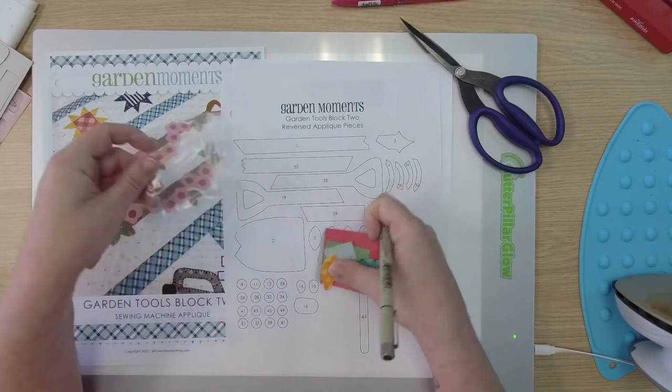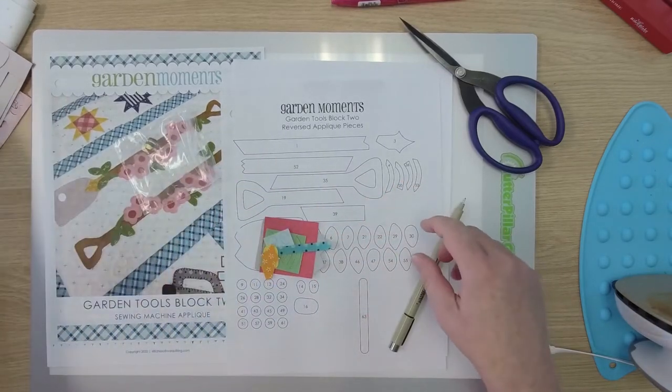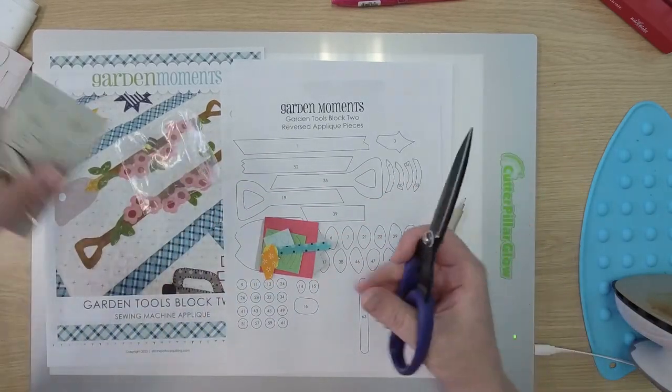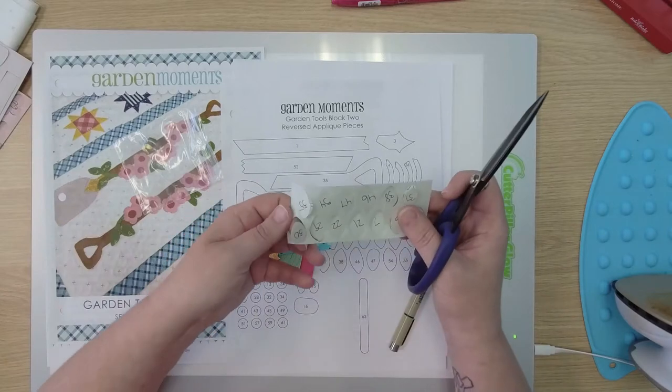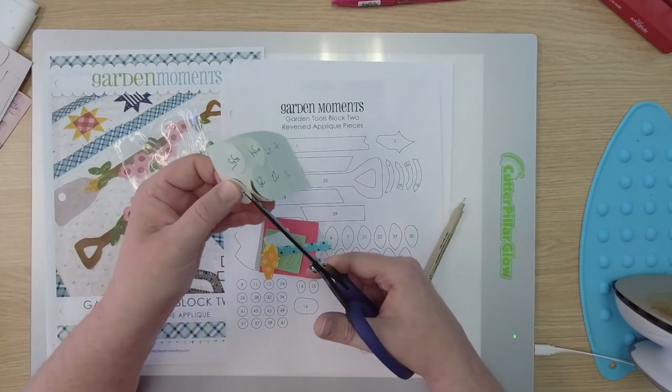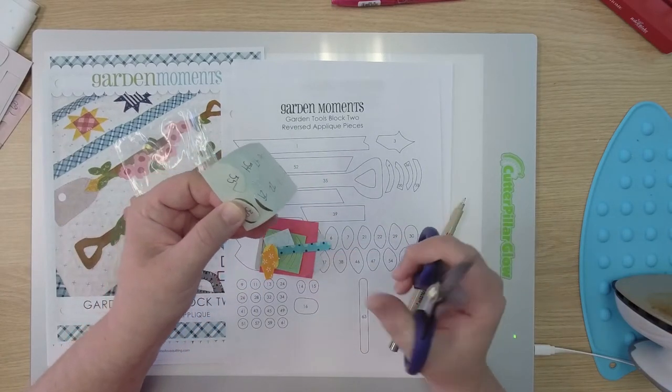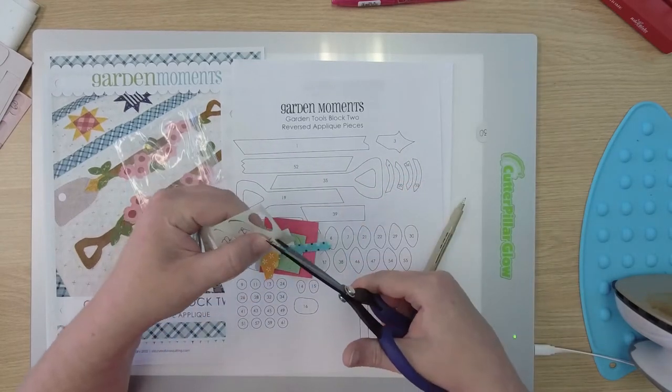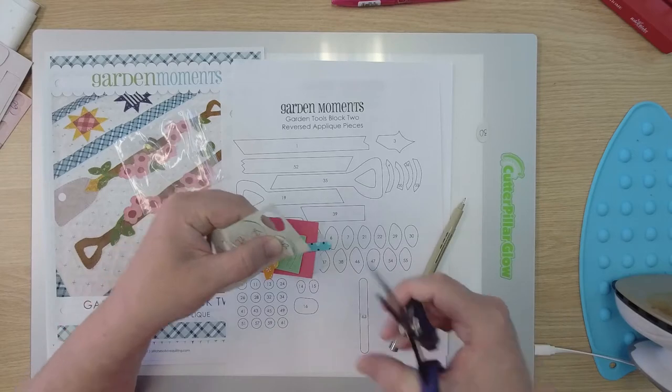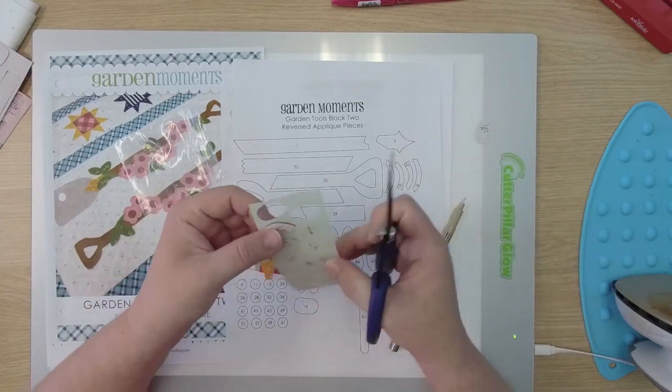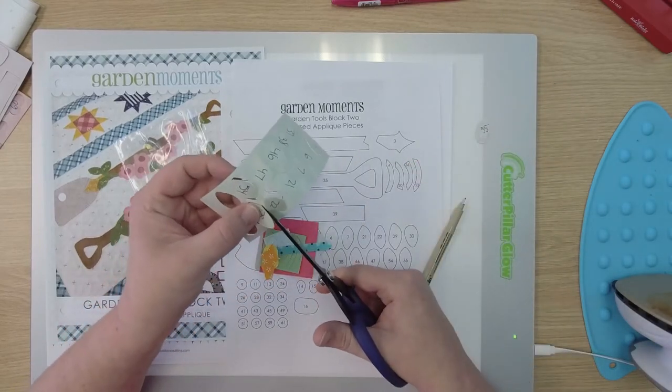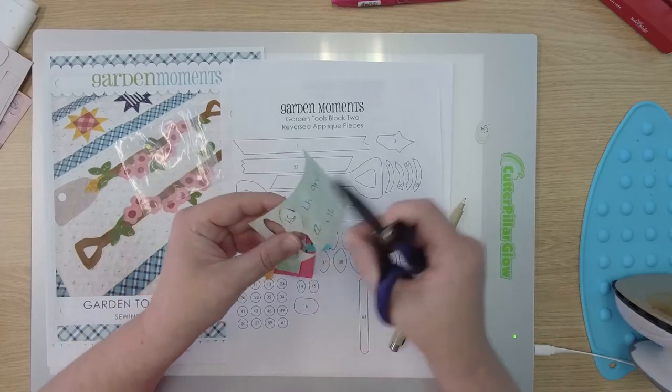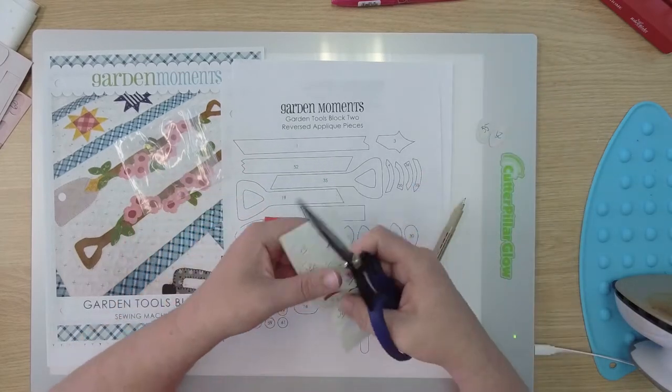And then what we're going to do after you number all of them, you're just going to snip them free. So the way it comes, everything is laser cut except for just a little bit. So you just take your favorite pair of scissors and snip. And then all of your pieces are free. So I'm going to keep doing this, you keep doing this in your sewing space. And then in just a moment, the magic of video, we'll be back to organize our pieces and start building our applique units.